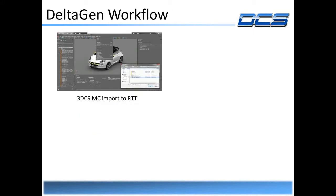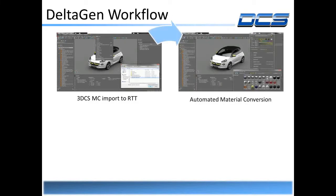The Delta Gen workflow is to import your 3DCS Multicad, which I'll go over in depth. Then we have an automated material conversion, which is really nice in the sense that as long as your materials are named correctly, they will convert to an RTT Delta Gen material automatically on import.